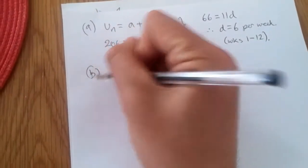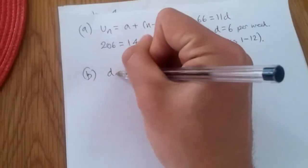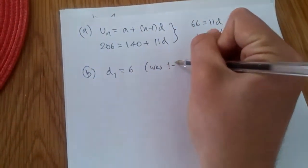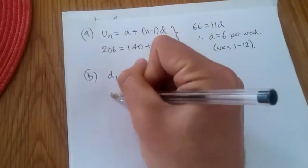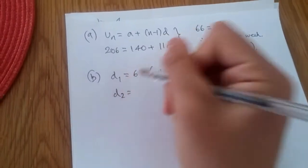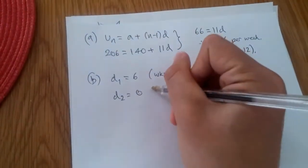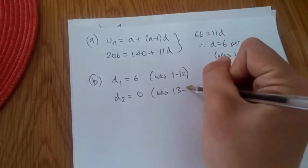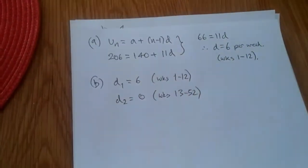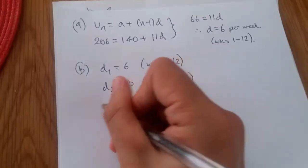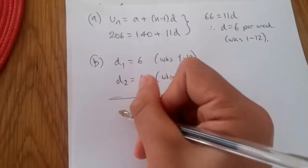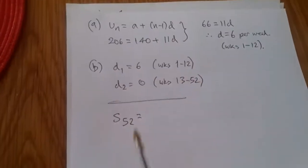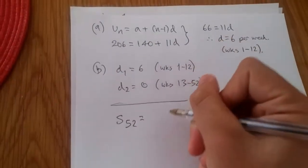So part B, we can say that the first change in difference, let's call it D1, is the difference of 6 between weeks 1 to 12. And then we know, of course, from week 13, there will be no difference. It will be locked at 206. So we say from weeks 13 to 52. So I like to plan my strategy before we actually get to it. So what does this mean? This means if we're going to find the sum of all 52 weeks, we take into account the sum of the first 12 weeks is here.